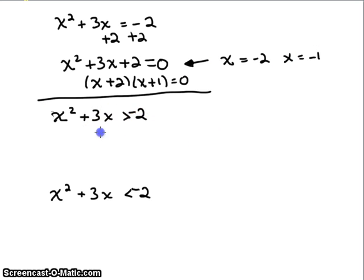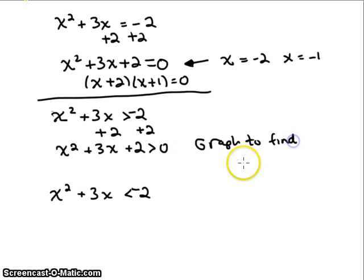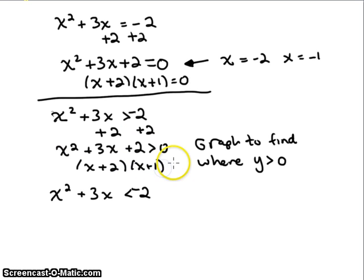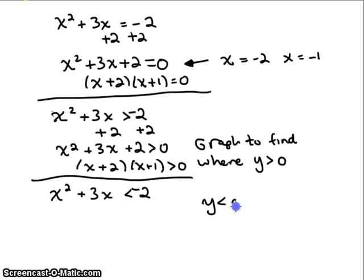We do the same for inequalities. We add two to both sides to change the inequality, and now we can graph to find where y is greater than zero. Rather than worrying about where this function is greater than negative two, we add two to both sides so we're looking at where the function is greater than zero — which is much easier to do on the graph. We factor and graph the same way.